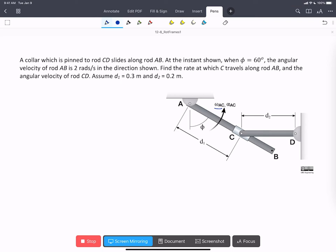Collar C, which is pinned on rod CD, is sliding up and down along AB. At the instant shown, which we're told is phi equals 60 degrees, we're given an angular velocity for rod AB. We're asked to find the rate at which C travels along rod AB, and the angular velocity of rod CD.